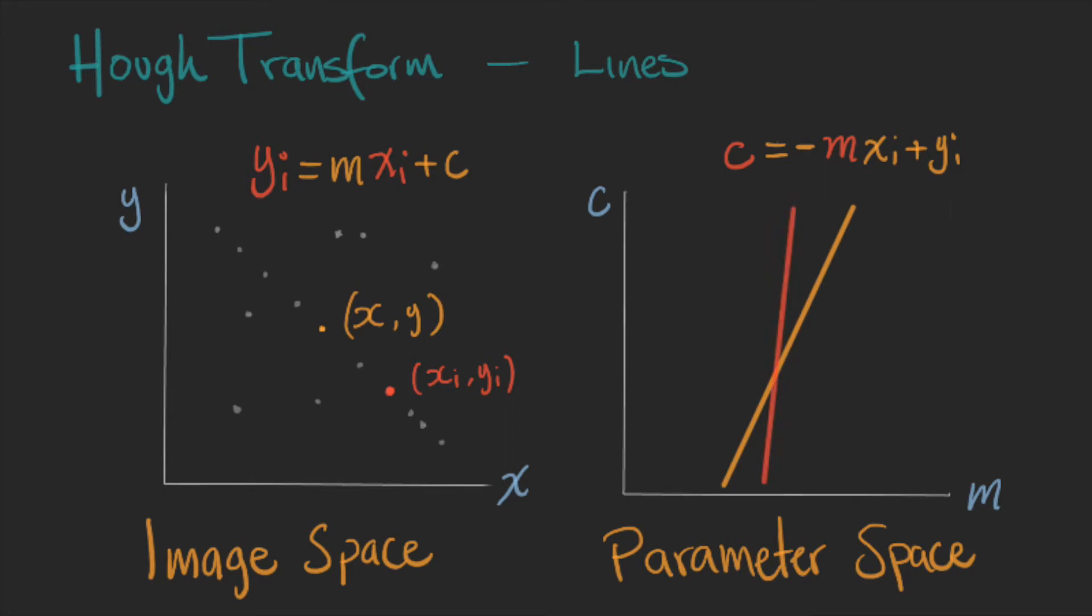Remember that this new line represents all possible lines in the second point. But only one line is shared between the two points.